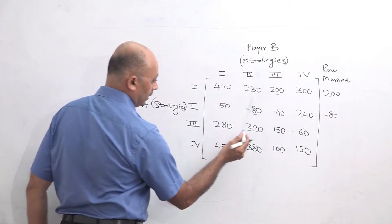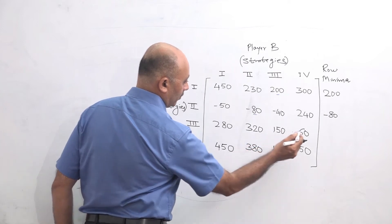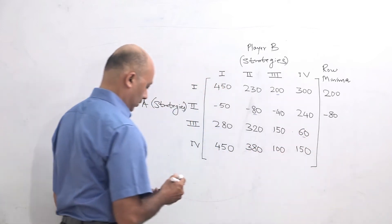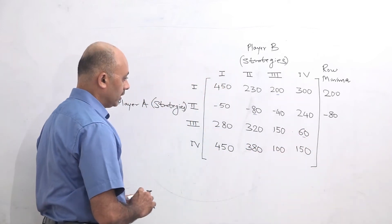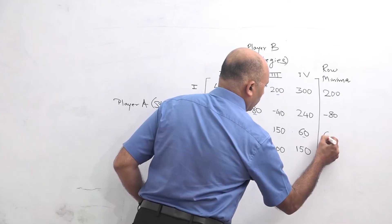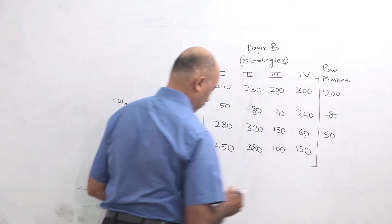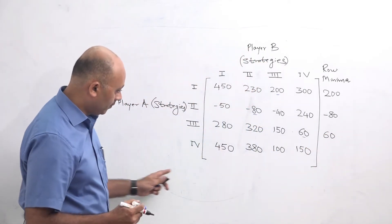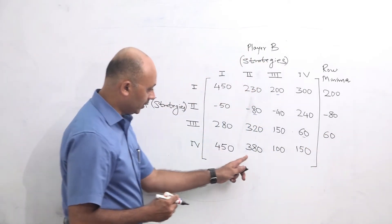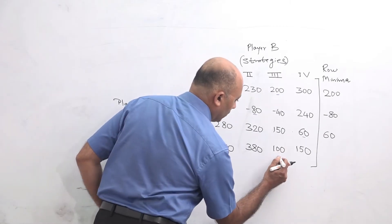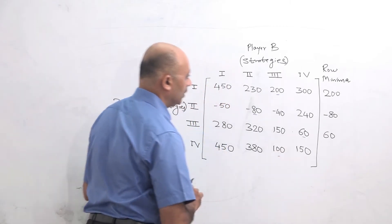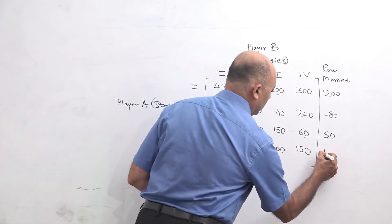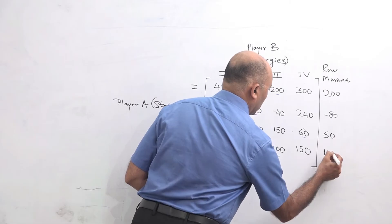Third row: 280, 320, 150, 60. The minimum value is 60, so row minima for row 3 is 60. Row 4: 450, 380, 100, and 150. The minimum value is 100, so the row minima for row 4 is 100.